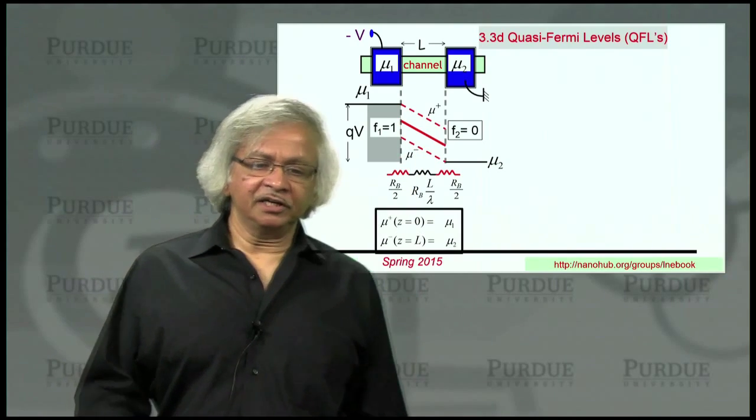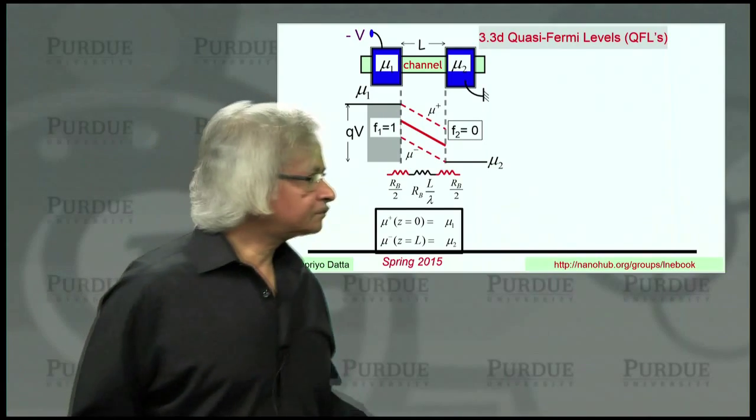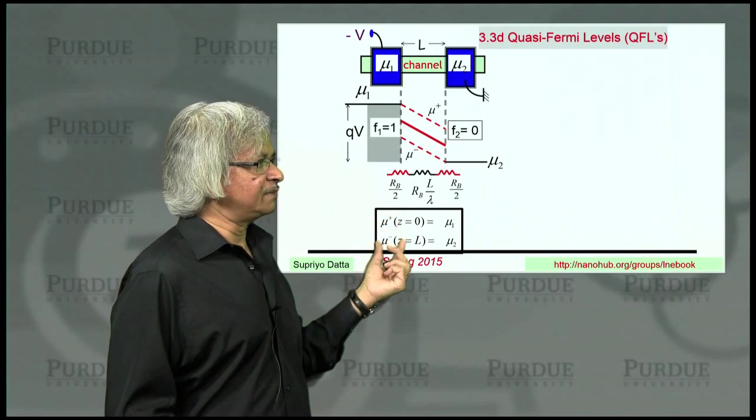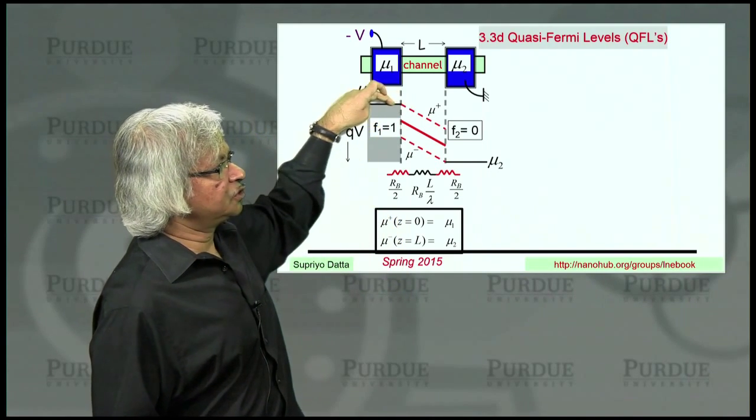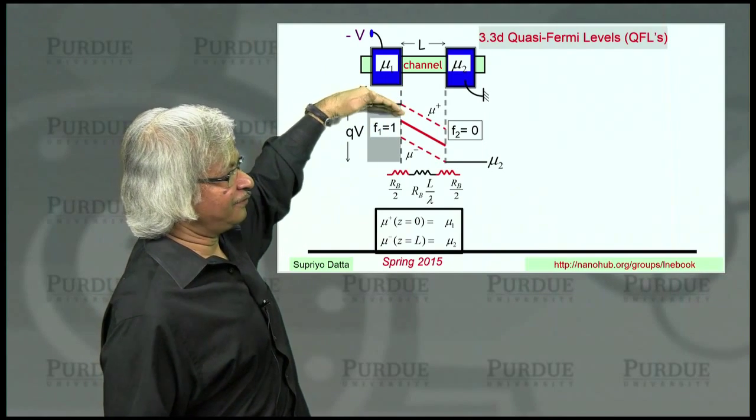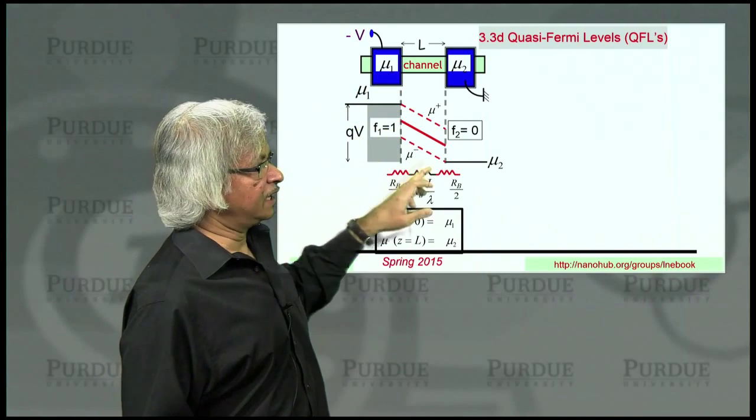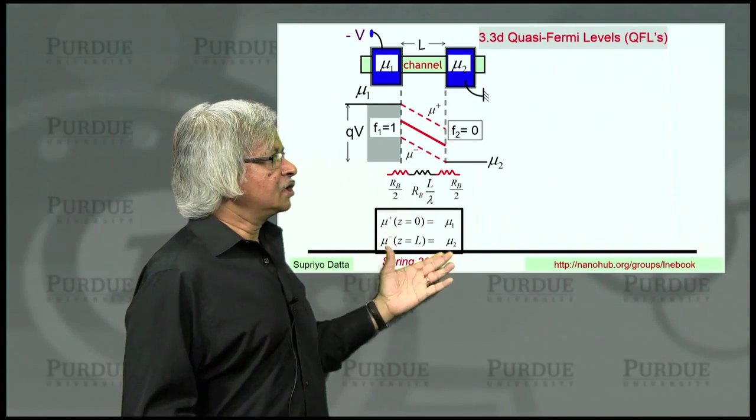So the boundary condition that you expect for these quasi-Fermi levels, mu plus and mu minus, is that mu plus at this end should equal mu 1. In other words, if states are filled here, they will want to be filled inside as well. And if states are empty here, it would also want to be empty right there.